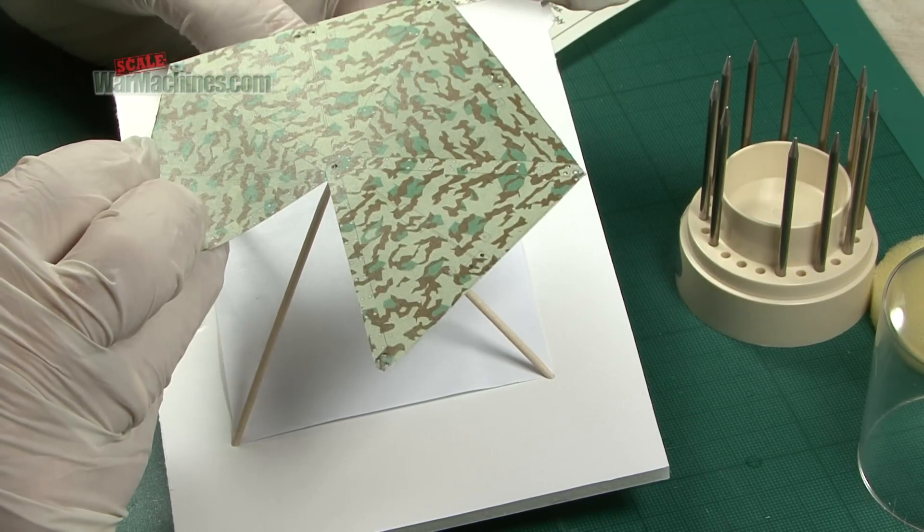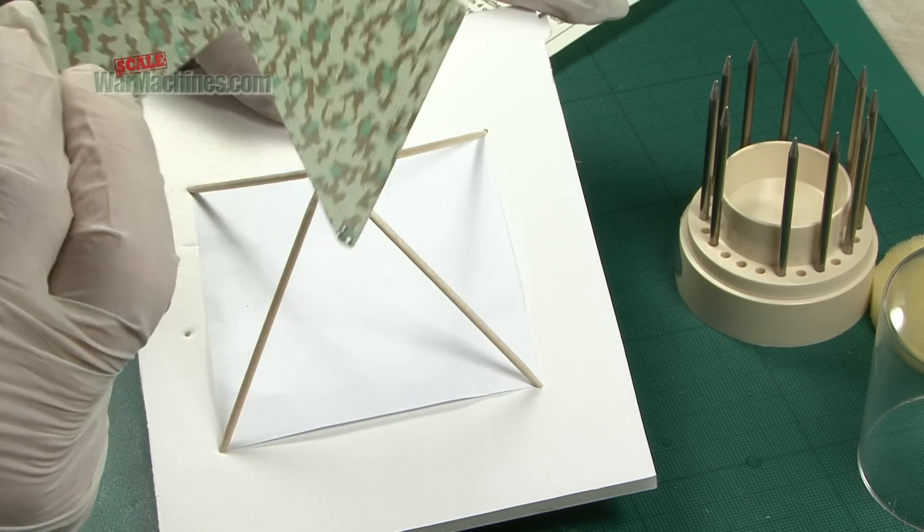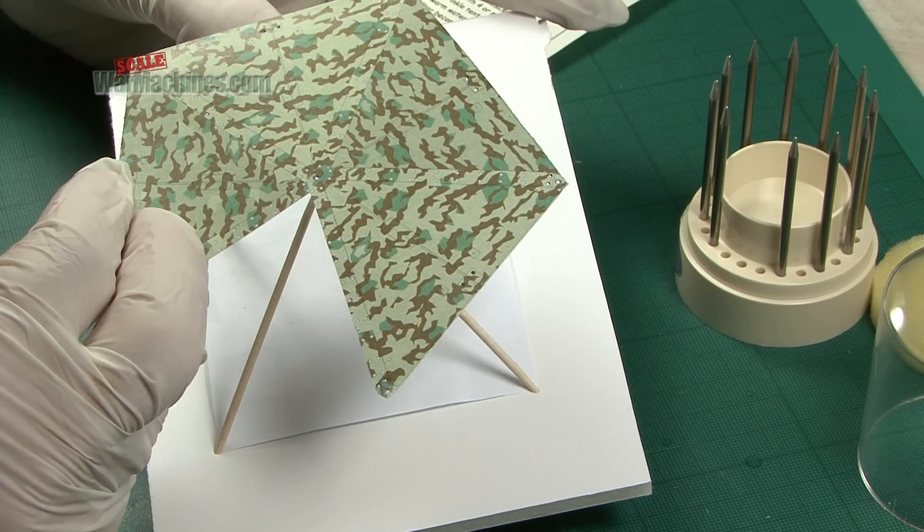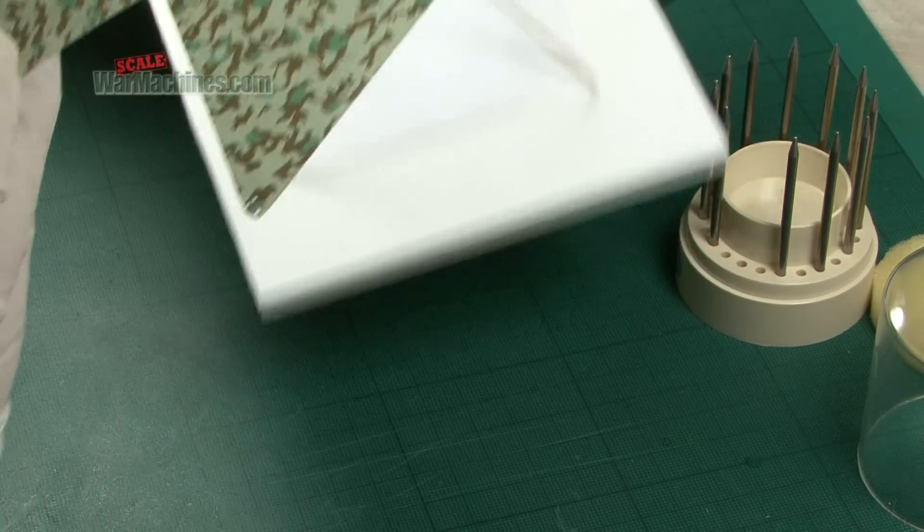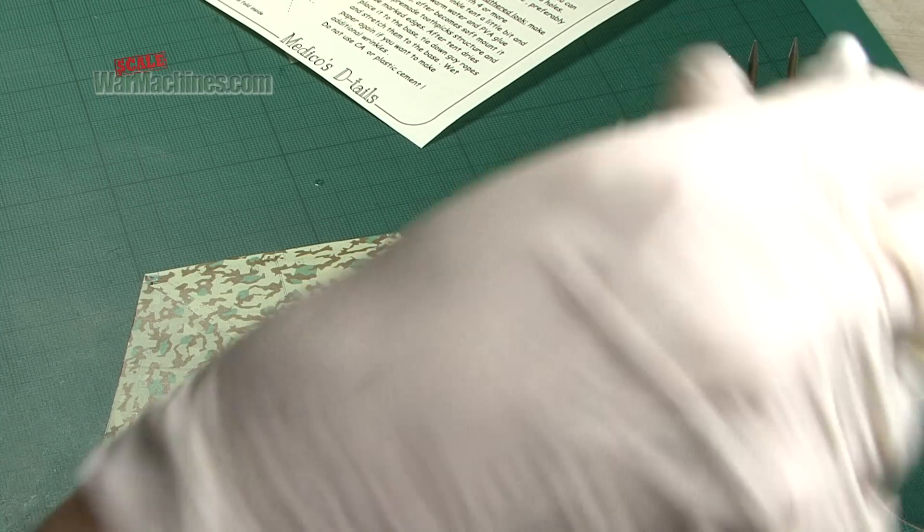We'll drape the zelt barn over the top but in order to get it to sit right it needs to be moistened and that's also going to create wrinkles. So what you do is just gently moisten it with a bit of water and white glue mixed together.